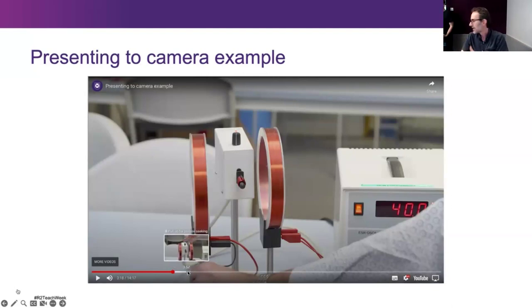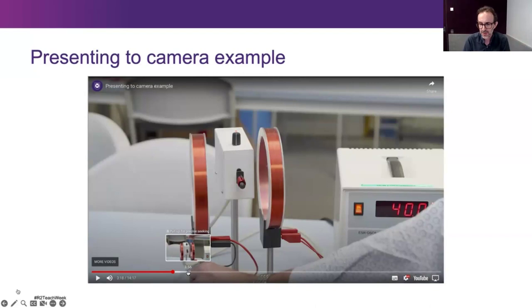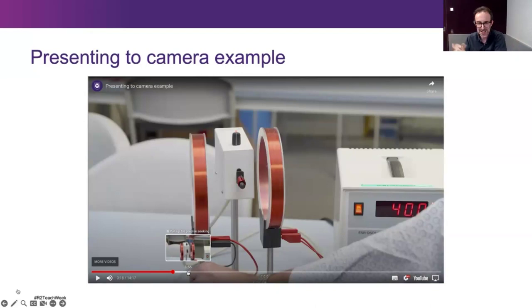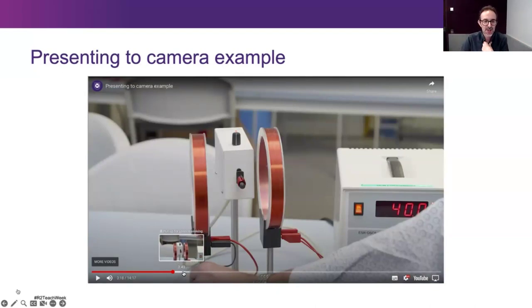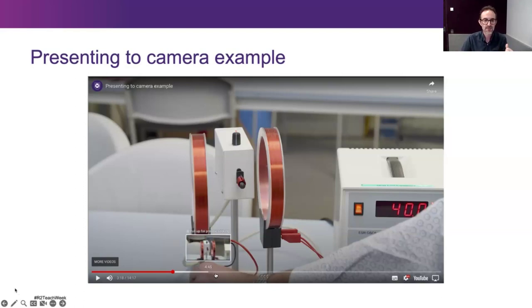Getting in closer to the action is a really effective way of breaking up shots. A lot of people would think just to point a camera at someone, press record and they explain something — but it's nice to also get shots of other things within the scene that you can focus in on during filming, just to break things up a bit. Getting in closer to the action is really, really effective.